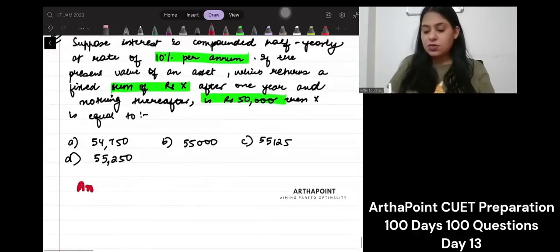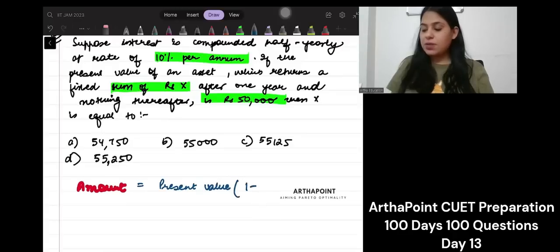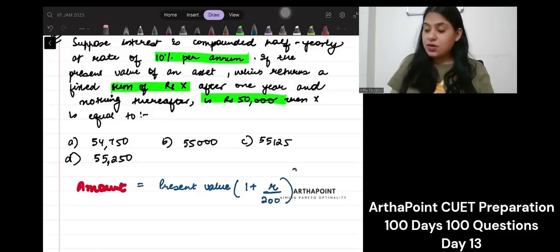So, you are given amount. Let me just rewrite this. Amount is present value 1 plus R half yearly, right? Half yearly given hai. So, by 200 to the power 2N for N years.